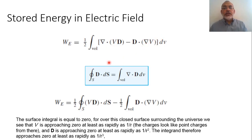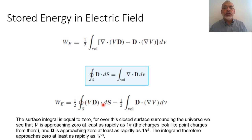From the divergence theorem, we know that the volume integral of the divergence of a vector field equals the surface integral over the closed surface enclosing that volume. So we can replace the first integration — the volume integral of ∇·(VD) dV — by the closed surface integral of VD·dS. The second part remains the volume integral of D·∇V dV.